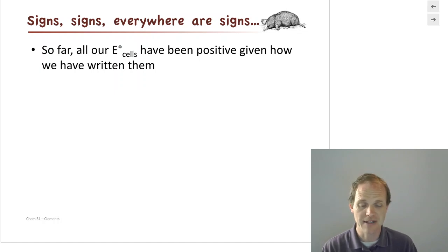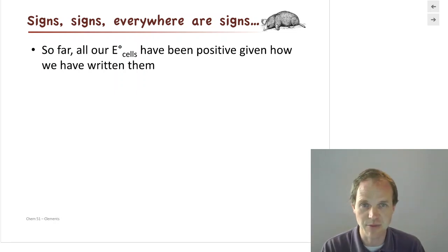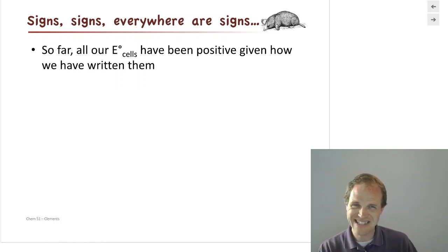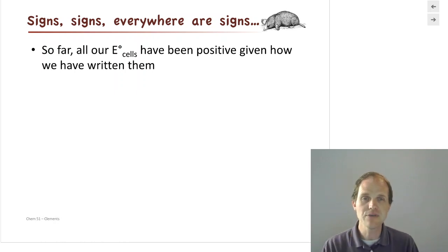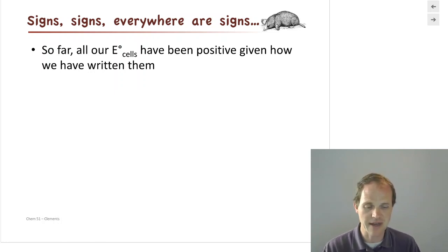Hello and welcome back. The next thing we're going to talk about: since we've now written cell potentials, we've noticed that all of our cell potentials in our galvanic cells, spontaneous cells, and voltaic cells — remember those are all synonyms — have all been positive. We can use that to our advantage to figure out what is going to oxidize and what is going to reduce by making sure the cell potential we get is positive.